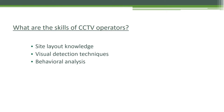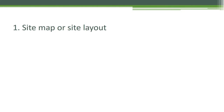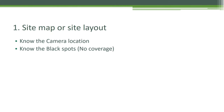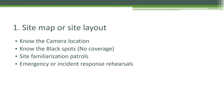Skill one is site map or site layout knowledge. All security personnel need to know their site layout, but the CCTV operator must be able to find the exact location through camera feeds and determine whether activities concern the safety and security of the organization. Tools to build this knowledge include: knowing camera locations, knowing black spots and no-coverage areas, site familiarization patrols, and emergency or incident response drills.